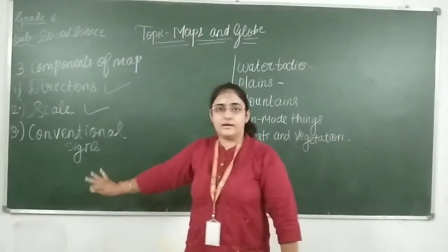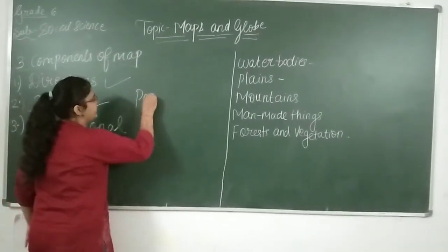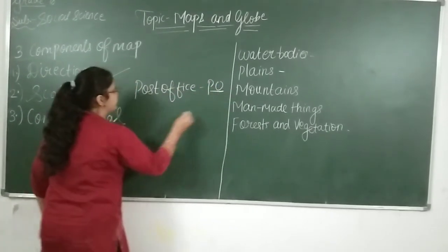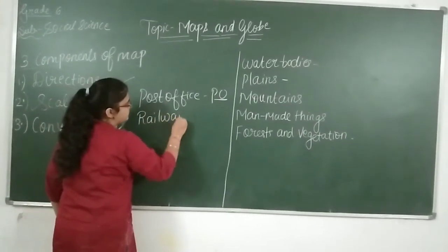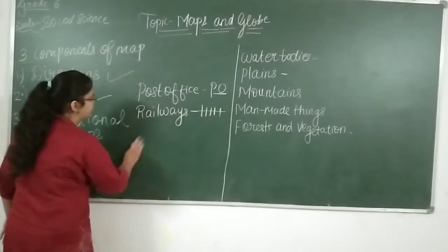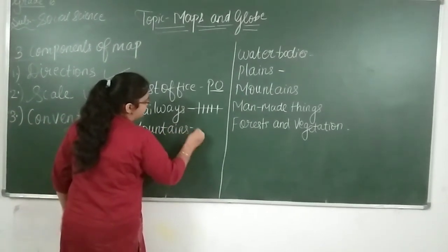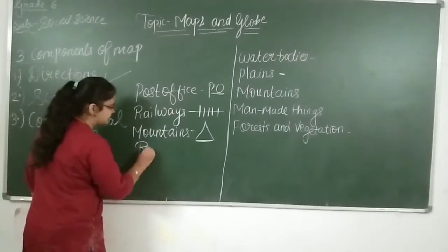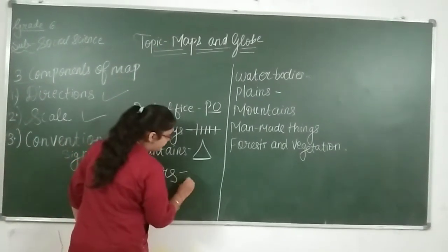What are conventional signs? For example, for post offices, 'PO' is used as a conventional sign. For a railway station, a specific conventional sign is used. For mountains, there is a symbolic form used as a conventional sign.